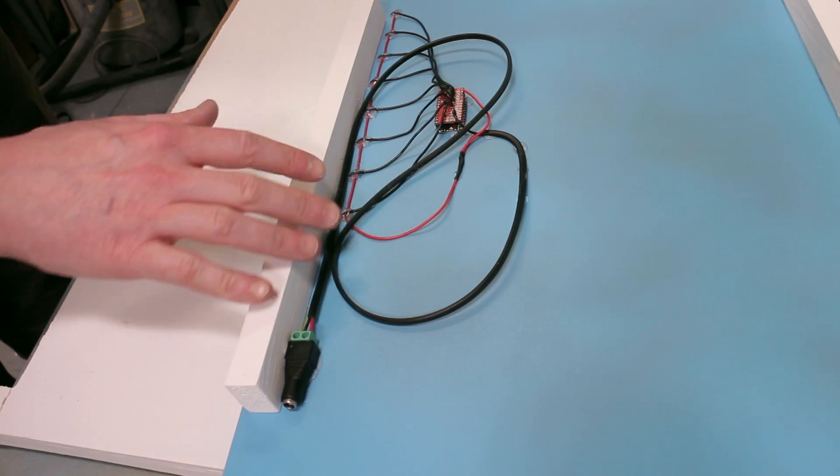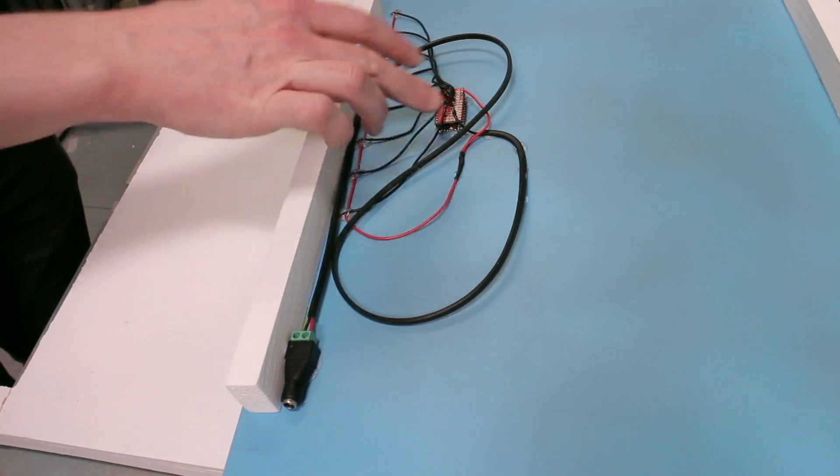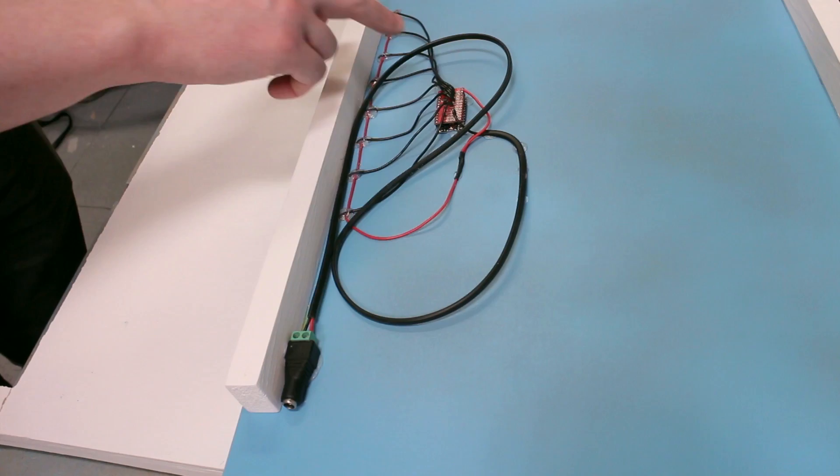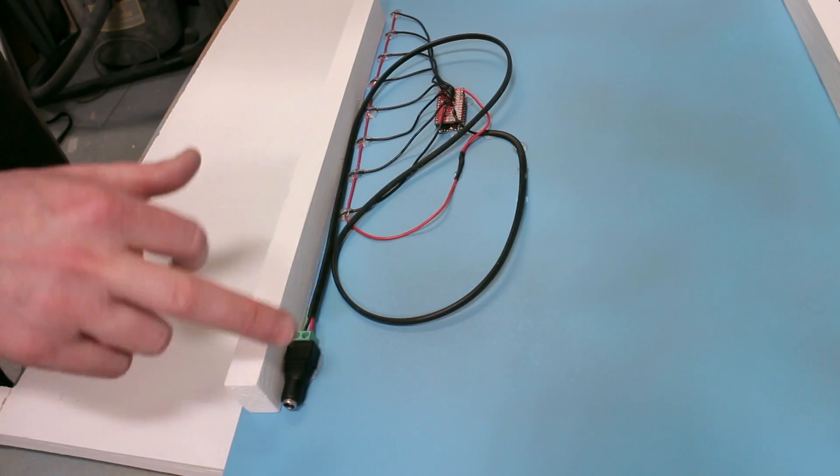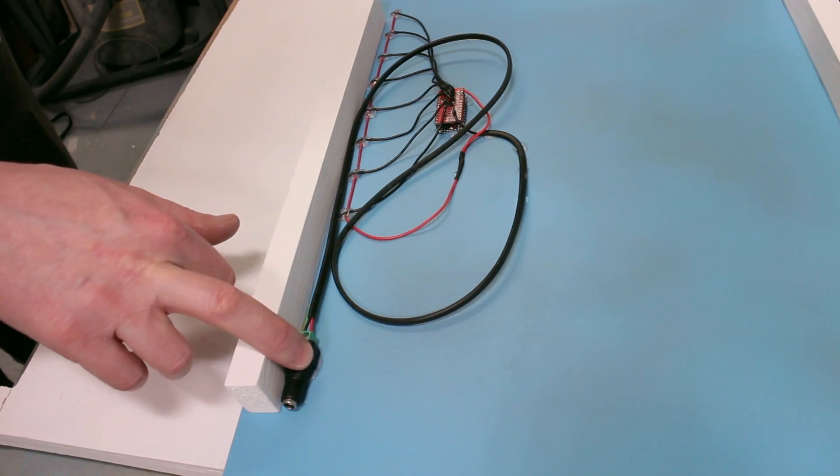The final wiring is incredibly simple. It's got the FET board, the Arduino Pro Mini, and the power for both of those comes from this barrel jack just glued in on the side.